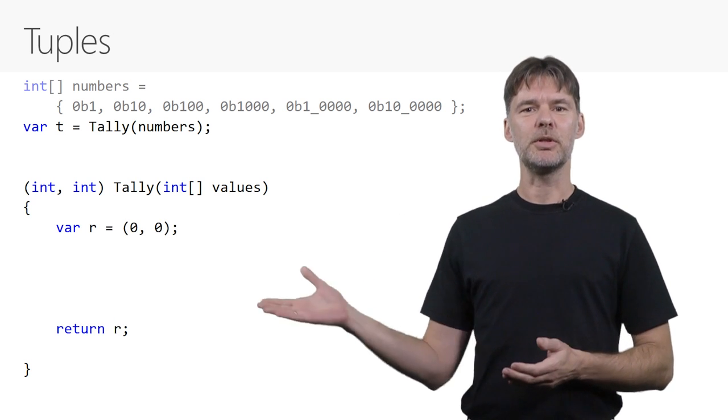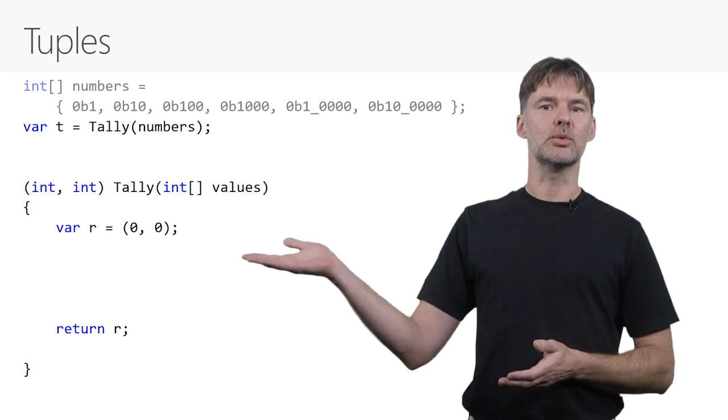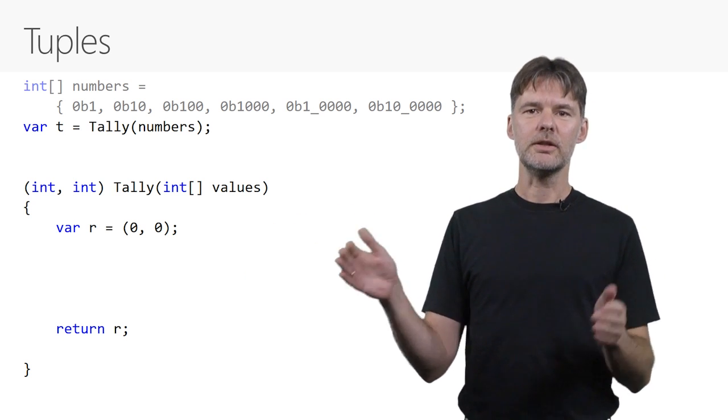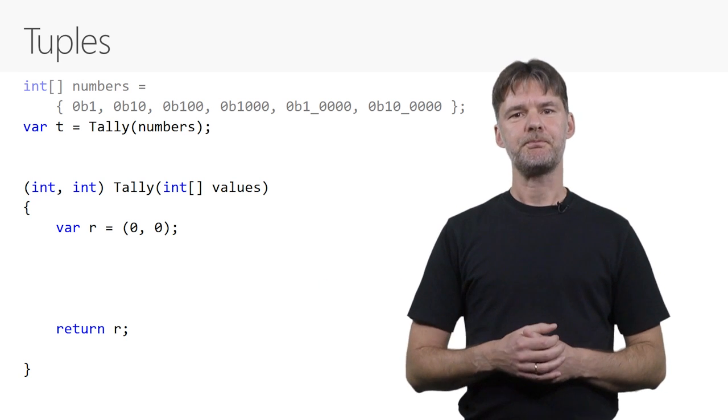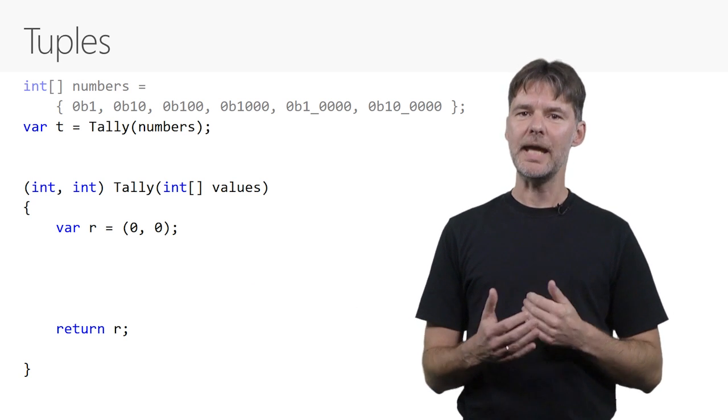Let's start with a dummy implementation of the method. Here I create a tuple value using a tuple literal. It consists of two zeros, again in parentheses, which we promptly return. In a little bit, we'll implement the method for real.